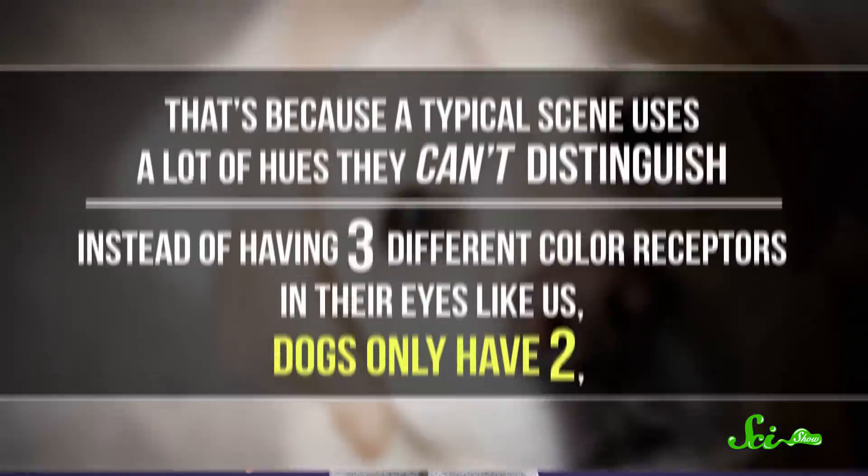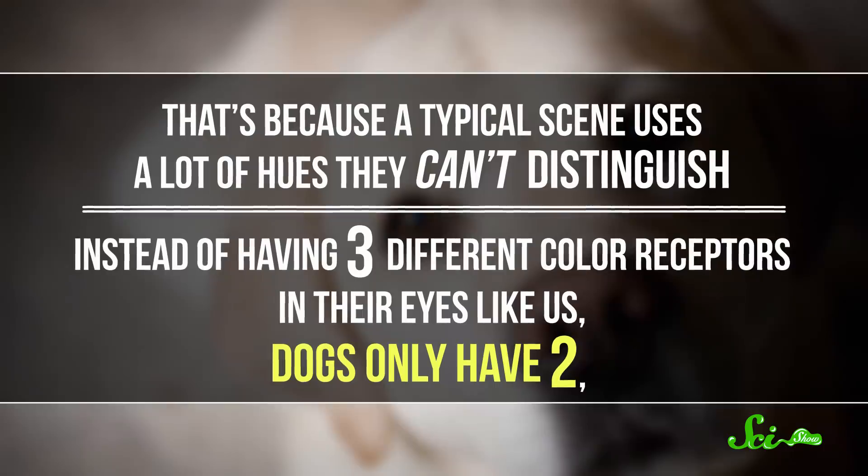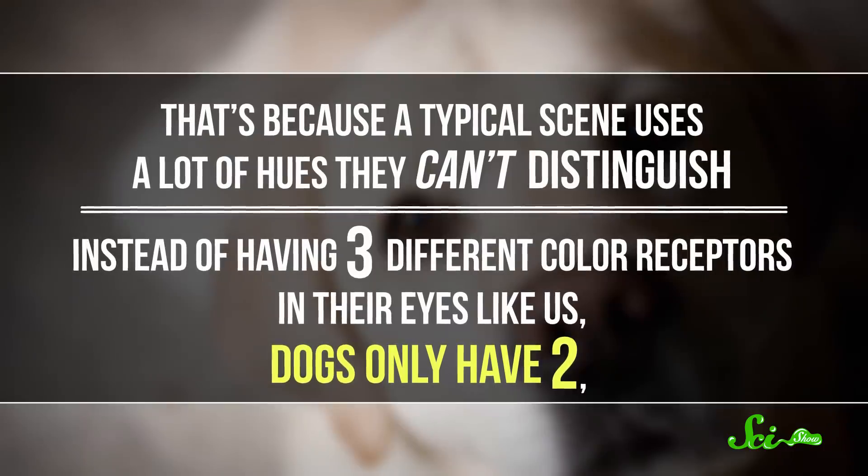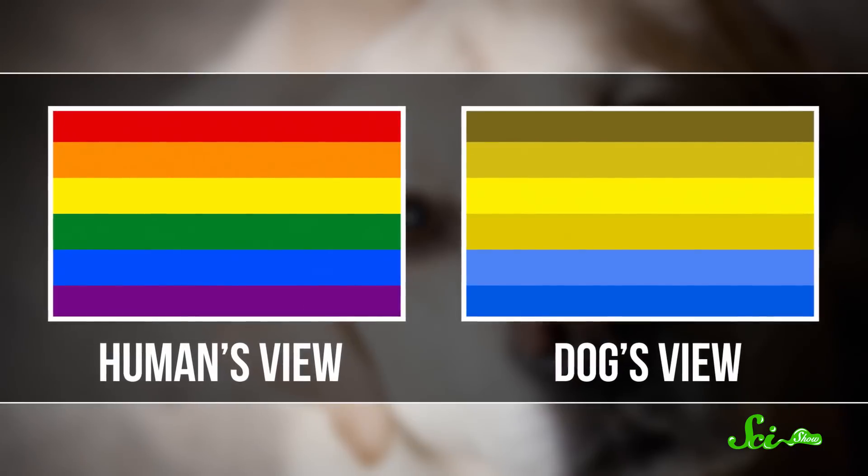And that's not the only part that might underwhelm them. No matter what type of TV you have, what might look like a vibrant, colorful image to you could be pretty meh for your dog. That's because a typical scene uses a lot of hues that they can't distinguish. Instead of having three different color receptors in their eyes like us, dogs only have two, so they only see worlds in shades of yellow and blue.